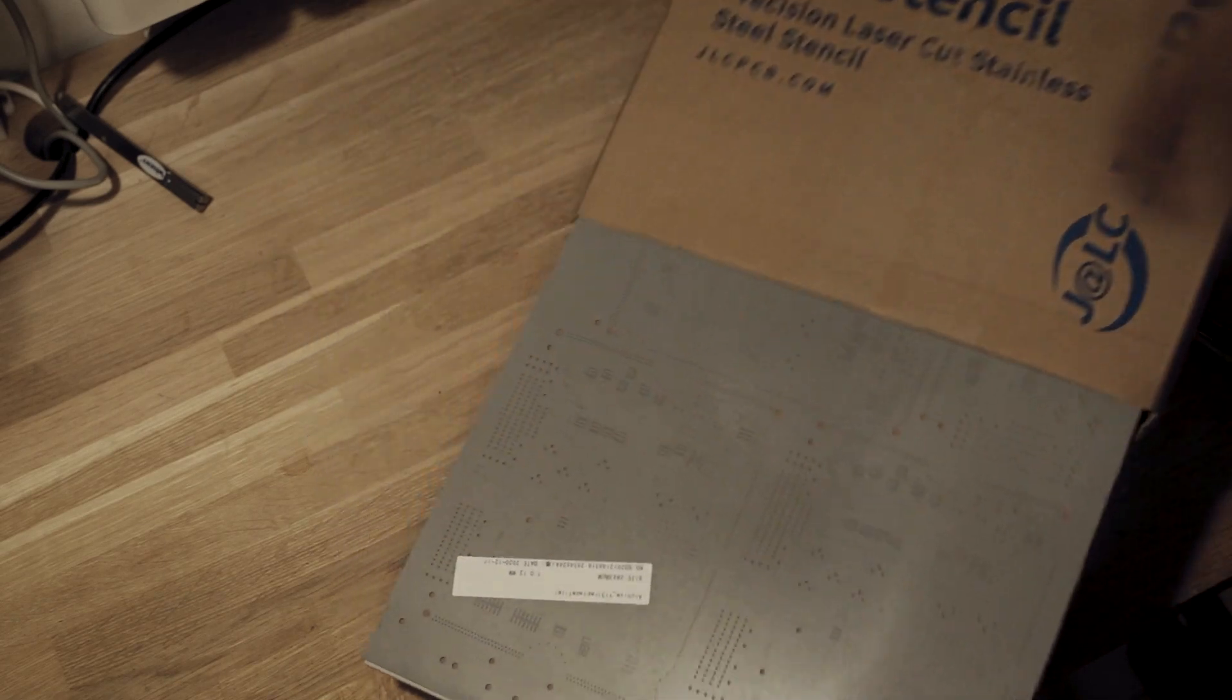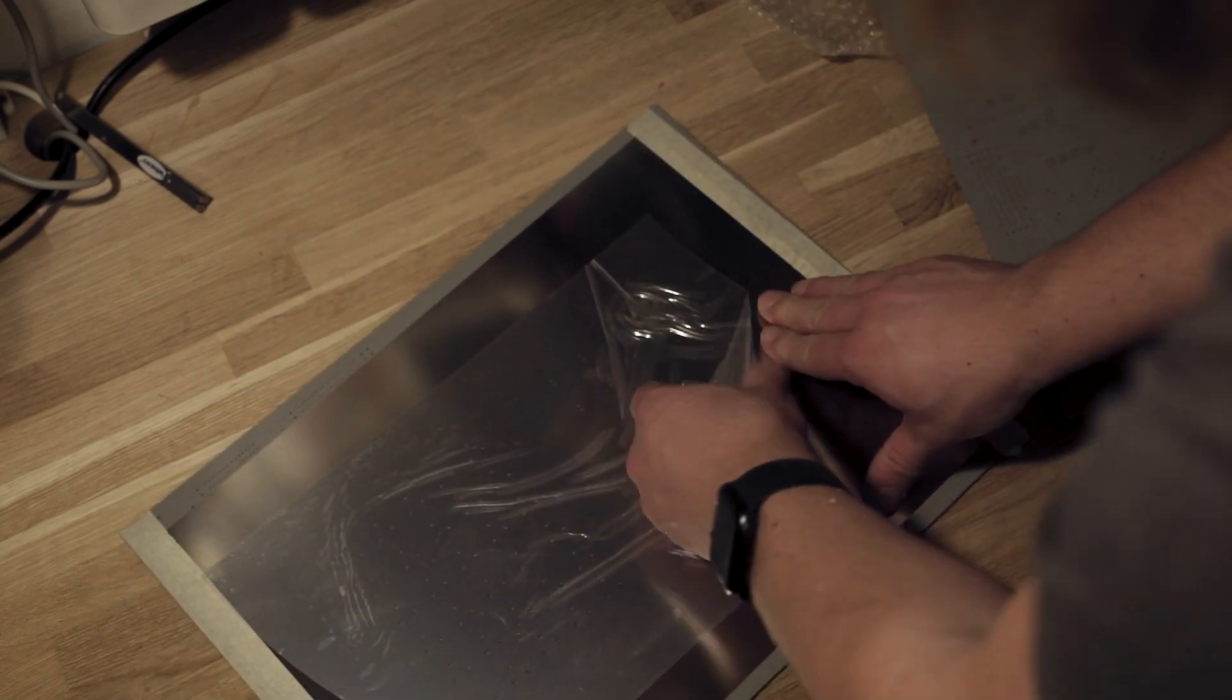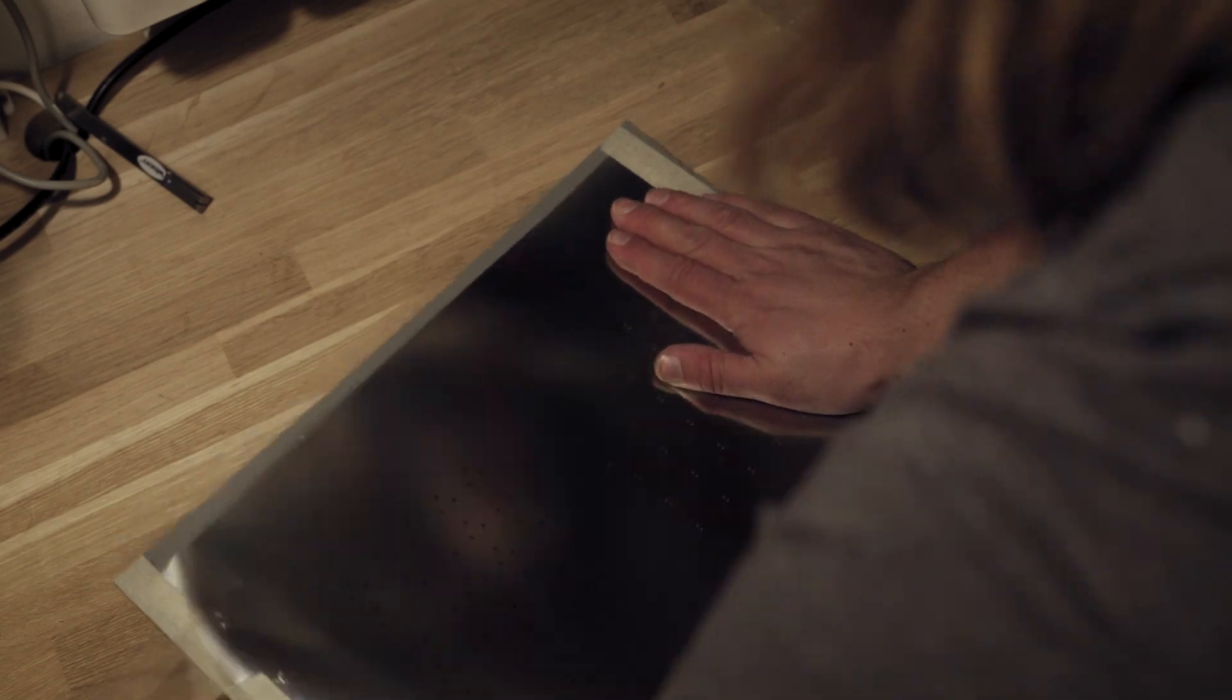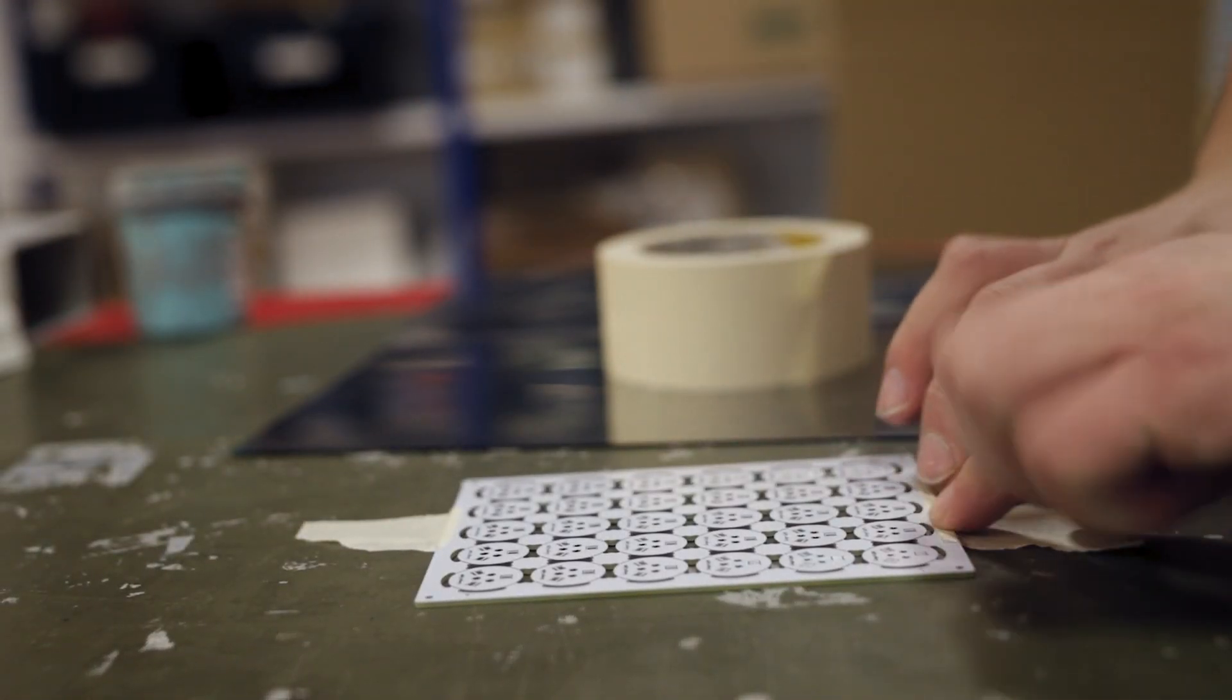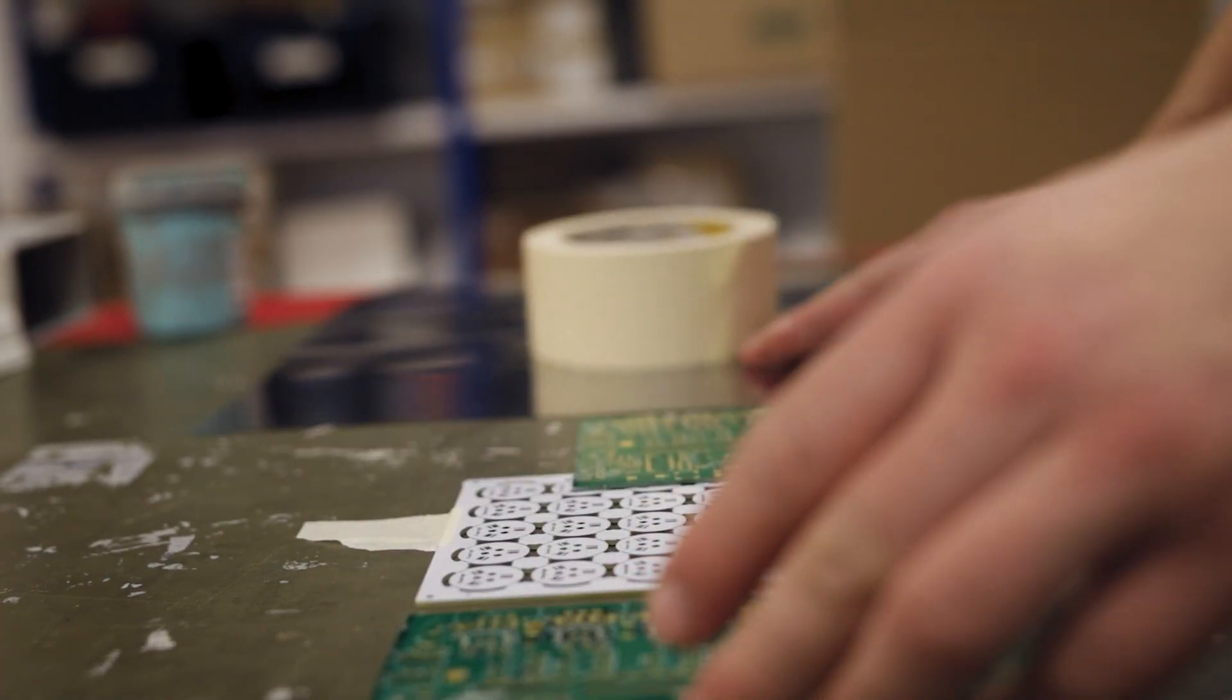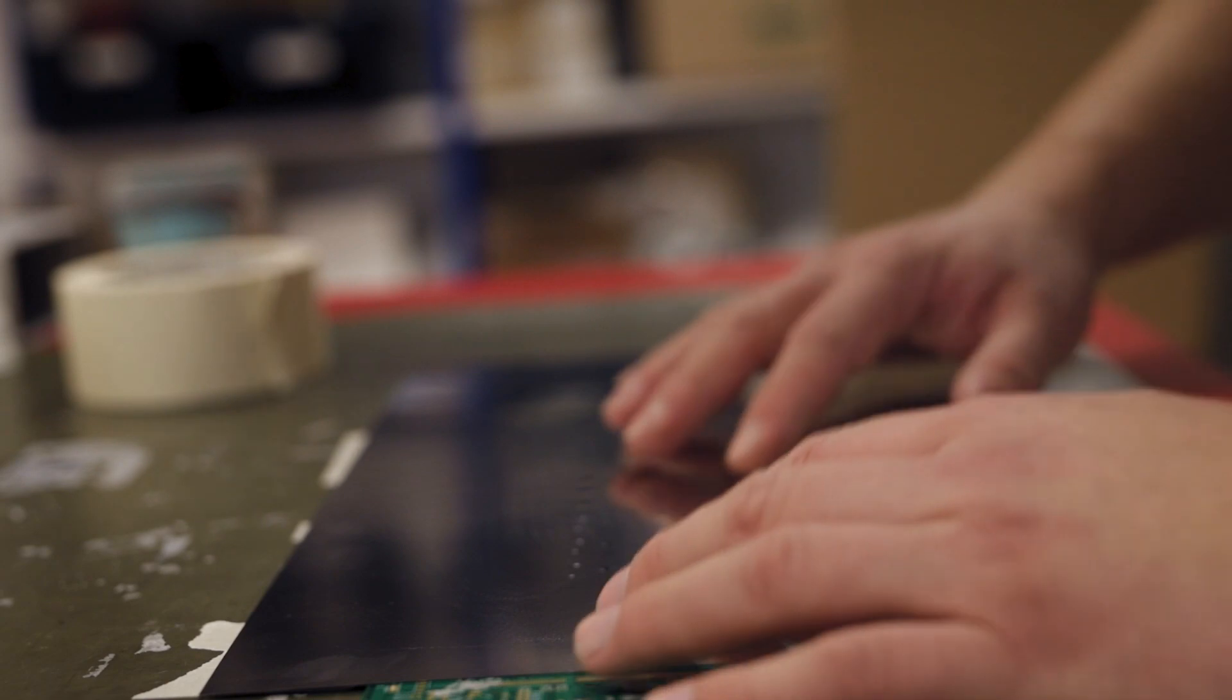The other package contains the stencil for applying solder paste to the LED PCBs. The PCB is taped down to the table getting it ready for solder paste being applied to it. PCBs are placed next to it to keep the stencil even.